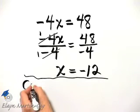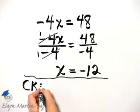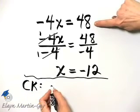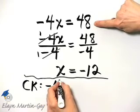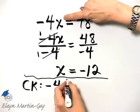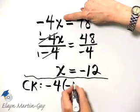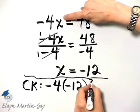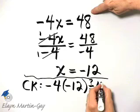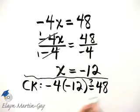Let's actually check. To check, I'm going to go and rewrite the original equation, but instead of X, I'll write negative 12. Now, is that indeed equal to 48? That's our question.